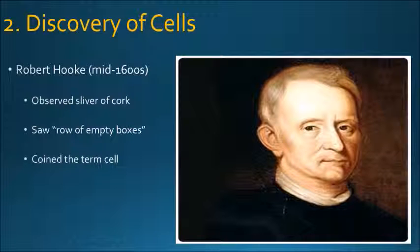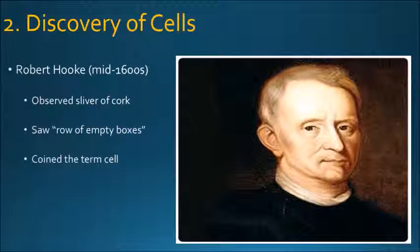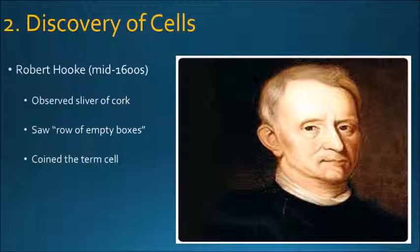The discovery of cells is something quite recent in time. This guy here, his name is Robert Hooke. He lived in the mid 1600s and he was trying with telescopes at the very start of his scientific career. He decided to swap the lenses and see what you could see with the lenses inverted. He was observing a sleeve of cork and he saw some empty boxes, and they coined the term cell. He published those results and that's why cells are called cells.